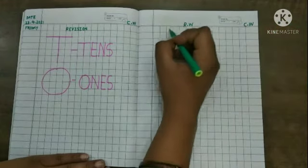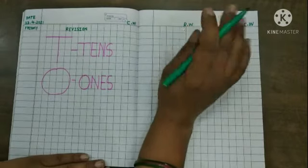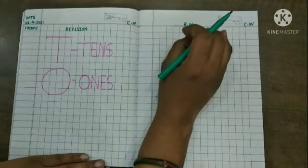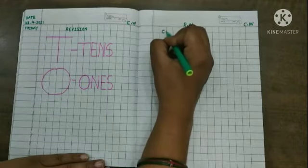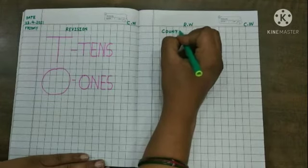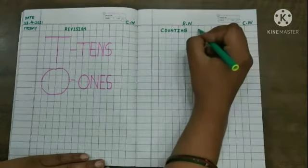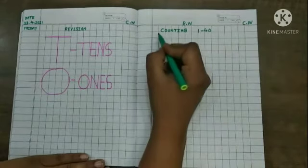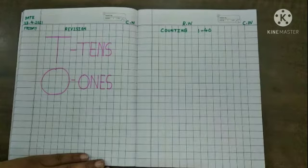In the middle of the page, you mention here counting 1 to 40. Today we are going to do revision of counting 1 to 40. C-O-U-N-T-I-N-G, counting 1 to 40.